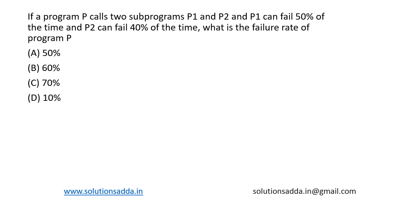This is a question from probability. If a program P calls two subprograms P1 and P2 and P1 can fail 50% of the time, P2 can fail 40% of the time, what is the failure rate of program P?